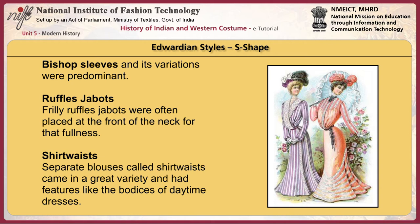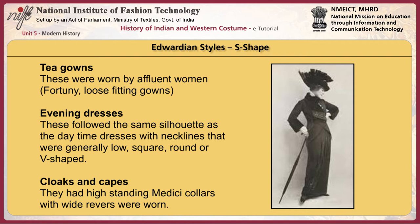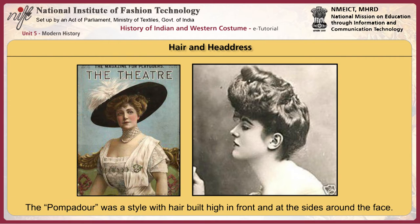Separate blouses called shirtwaists came in great variety and had features like the bodices of daytime dresses. Tea gowns were worn by affluent women, as were Fortuny's loose-fitting gowns. Evening dresses followed the same silhouette as daytime dresses with necklines that were generally low — square, round, or V-shaped. Cloaks and capes with high standing Medici collars were also worn. Hair was arranged full and loose around the face, or pulled into a chignon or bun at the back of the neck.